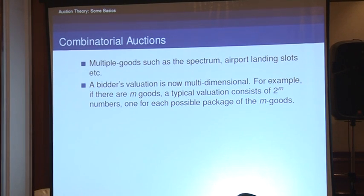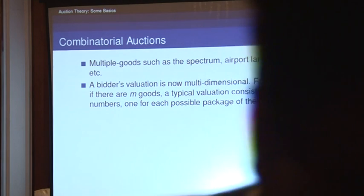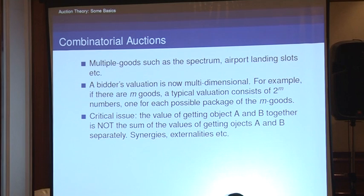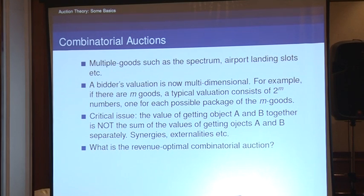Combinatorial auctions involve multiple goods such as spectrum or airport landing slots. The critical thing to remember is that a bidder's valuation is multi-dimensional — not one number but a whole string of numbers. If there are m goods, a typical valuation consists of 2^m numbers, one for each possible package of the m goods. The value of getting objects A and B together is not the sum of the values separately, because of synergy and externalities.